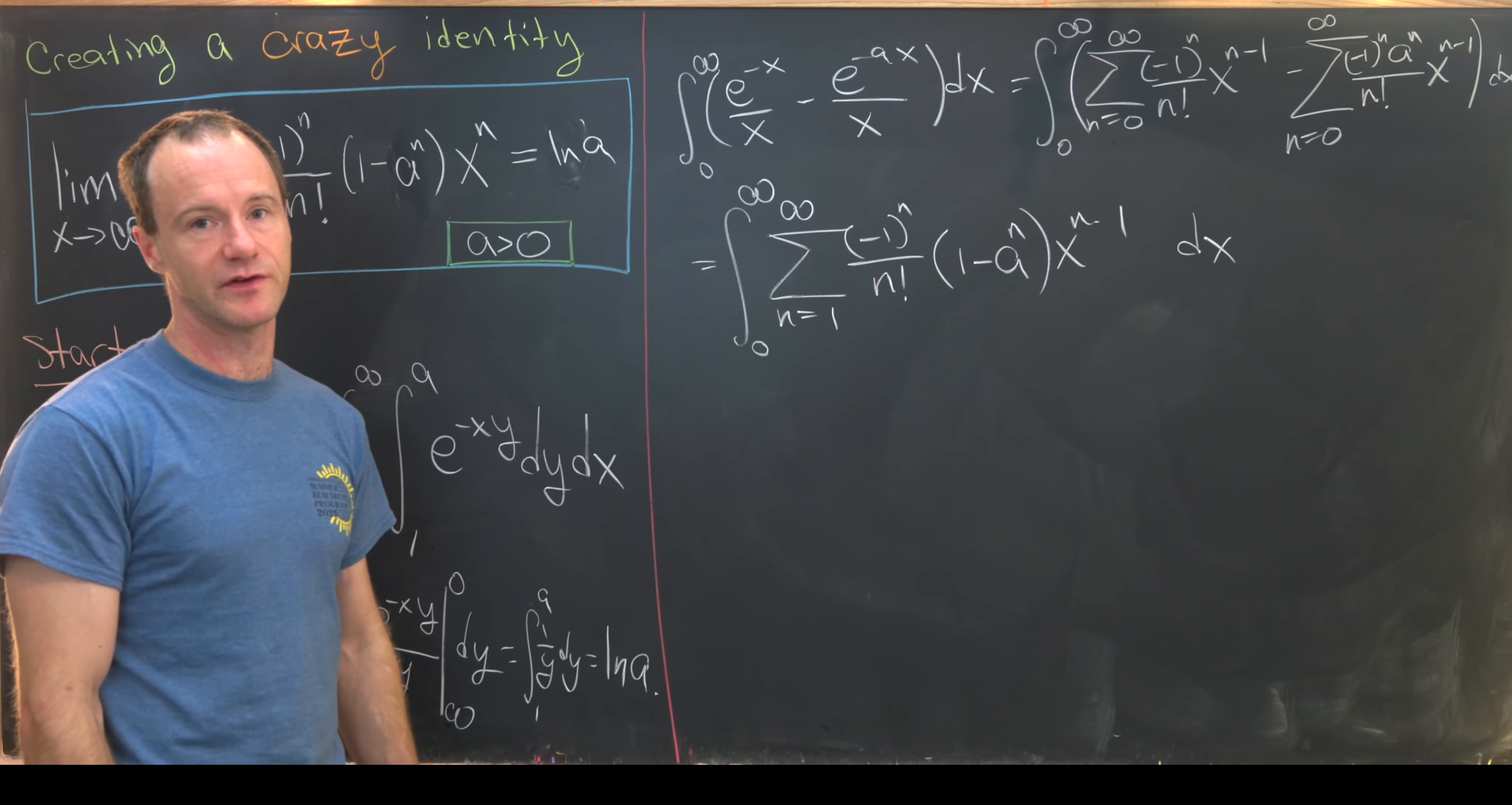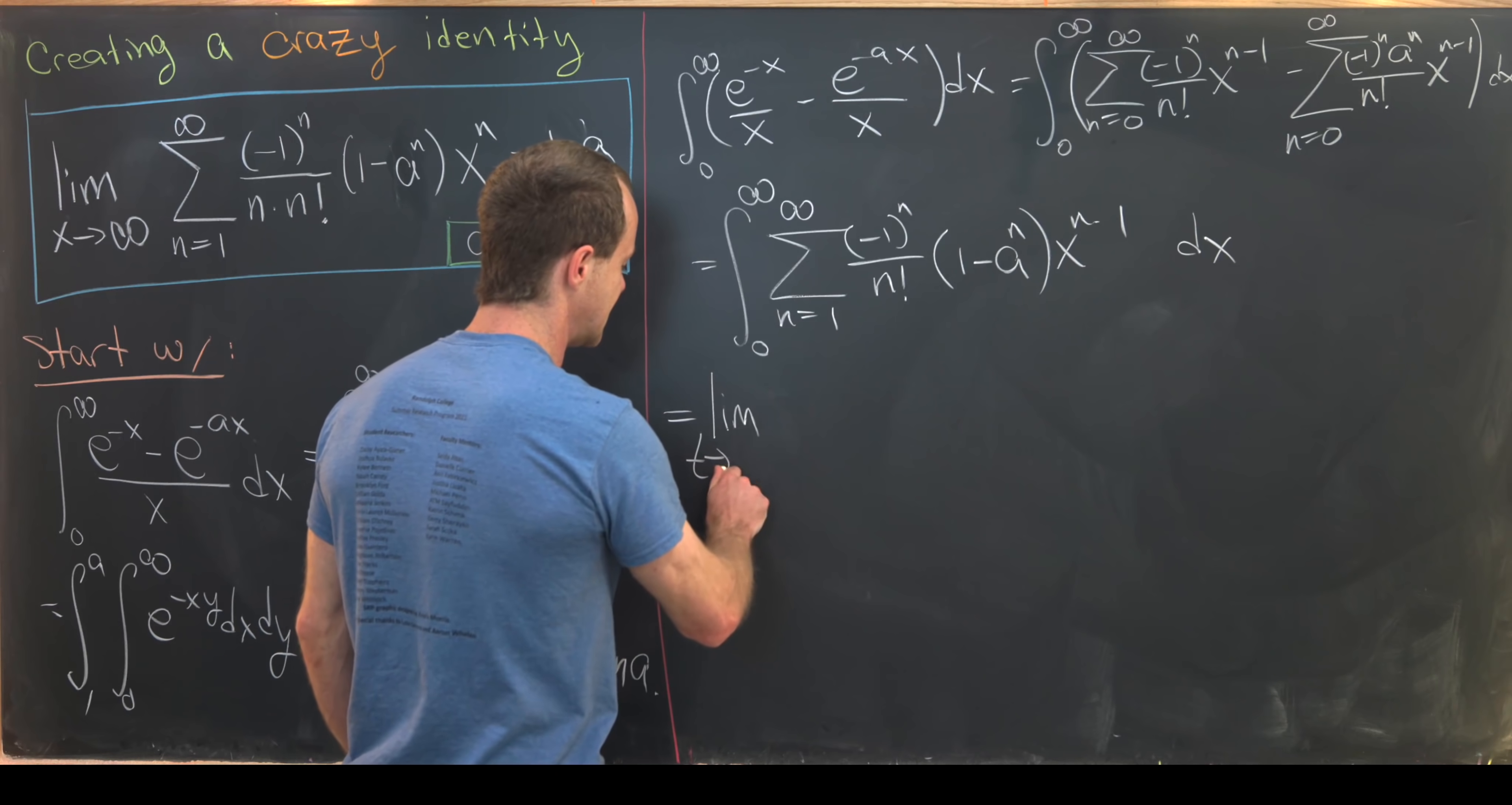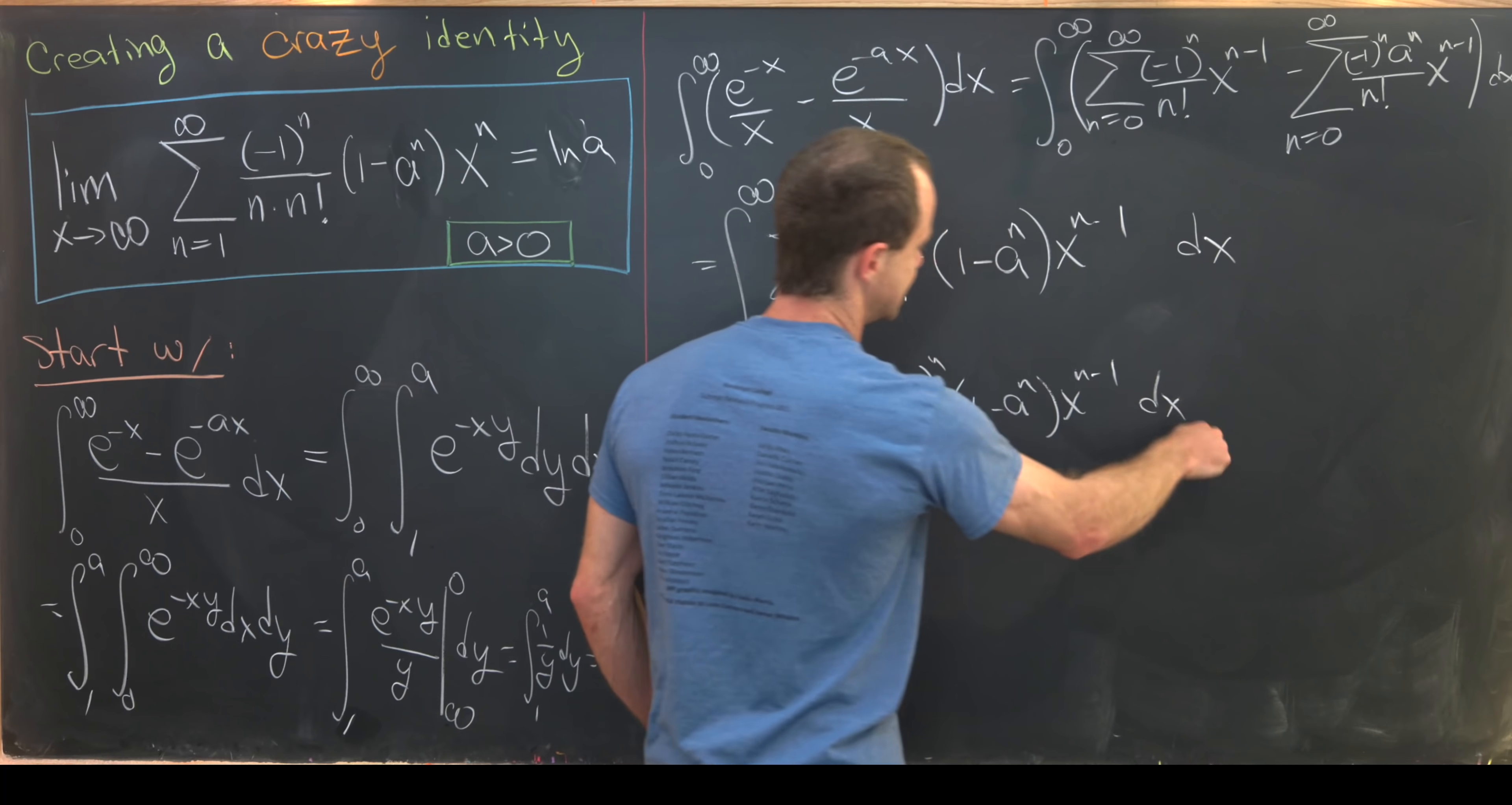But now we've got an improper integral so let's change this improper integral to the limit of a proper integral. That'll be the limit as t approaches infinity of the sum as n goes from 1 up to infinity minus 1 to the n over n factorial 1 minus a to the n x to the n minus 1 dx.